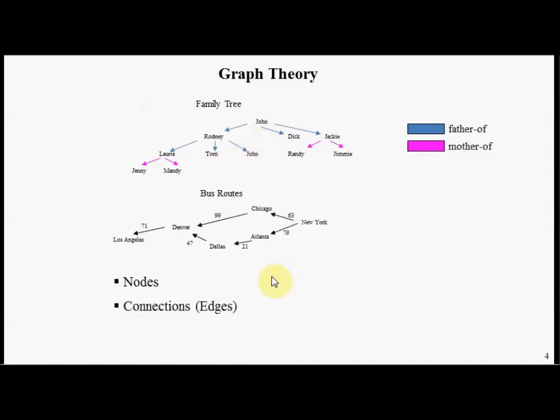A second component of graphs are these things called connections or edges, and they happen to be the arrows we see between nodes. Sometimes in graphs you have a semantic relationship associated with these arrows. In this family tree graph we have a father-of relationship and a mother-of relationship. Sometimes with graphs you have scalar values associated with the connections. In this bus routes example the scalar value represents a cost of going from one city to another.